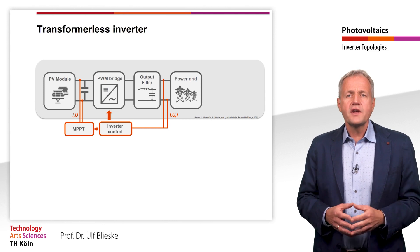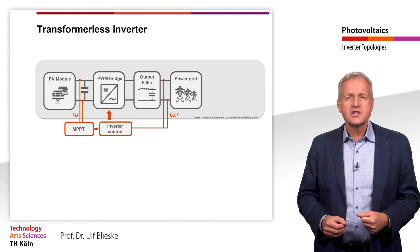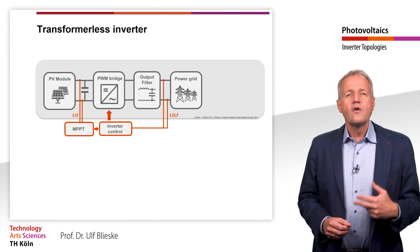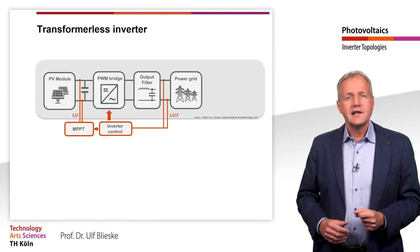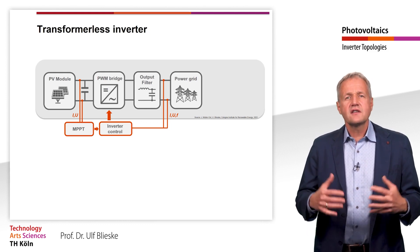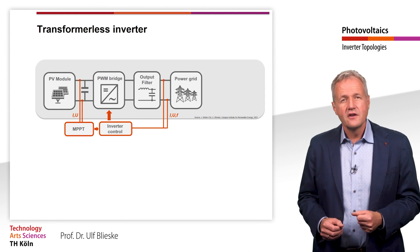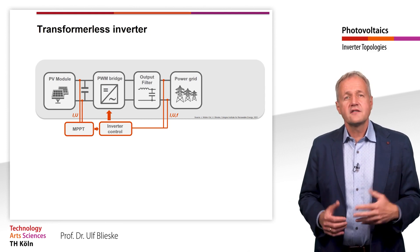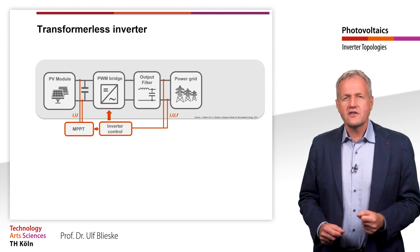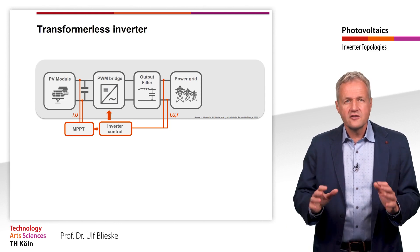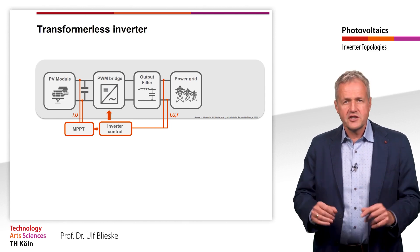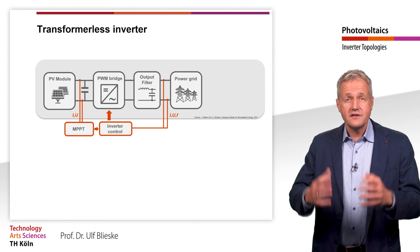The inverter shown here is a single-stage transformerless inverter. The voltage is only converted once in the PWM bridge. Since every voltage conversion is accompanied by losses, this topology has its advantages. However, there are restrictions regarding the voltage with this topology. The PWM circuit can be used to reduce the voltage, but not to increase it.